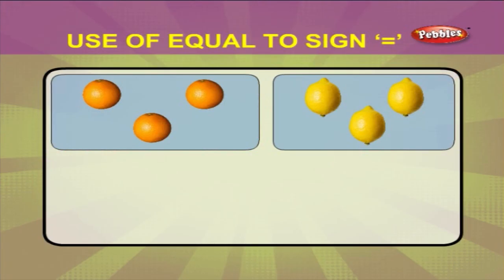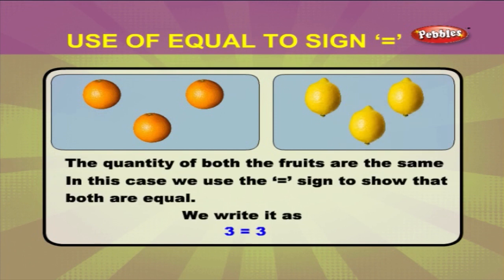See this picture. There are 1, 2, 3 oranges and 1, 2, 3 lemons. The quantity of both the fruits are the same. In this case, we use the equal to sign to show that both are equal. We write it as 3 is equal to 3.